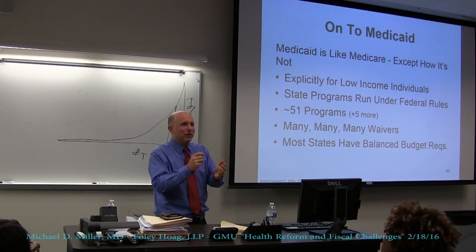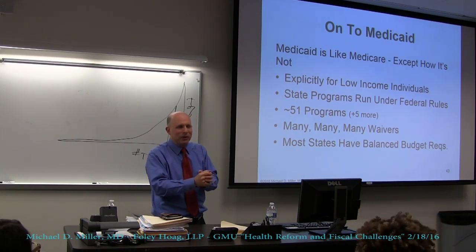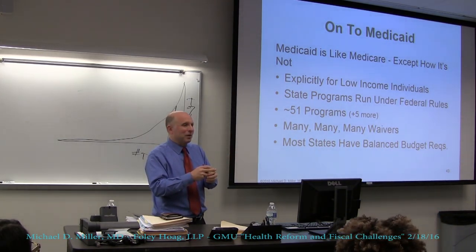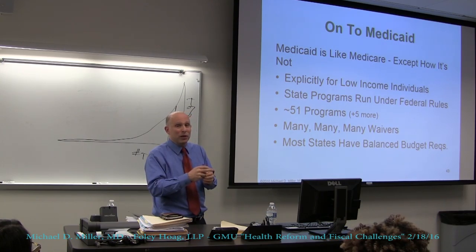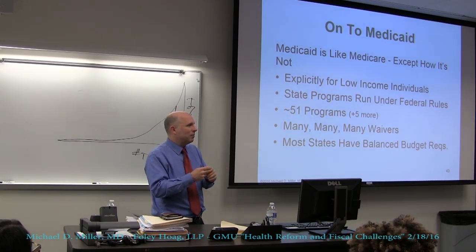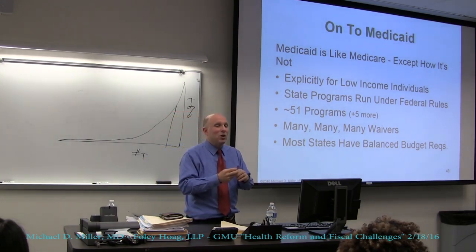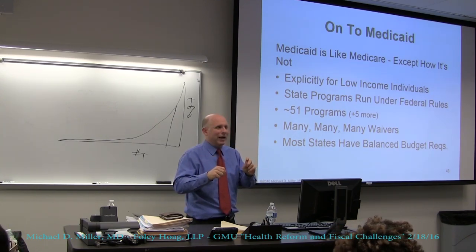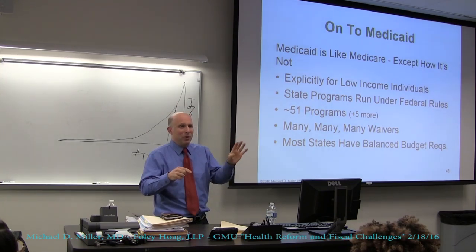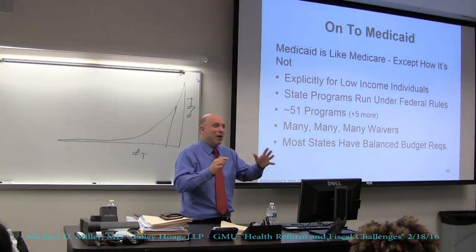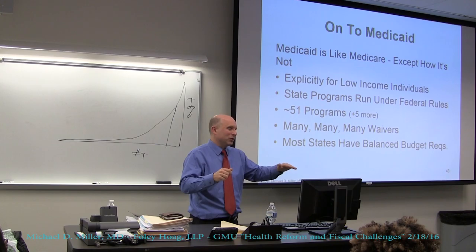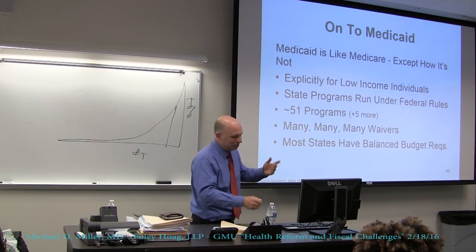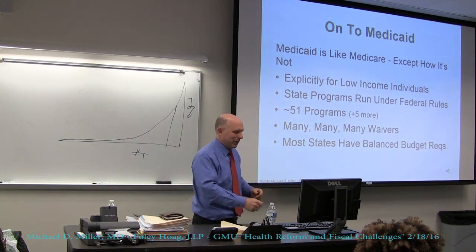Extraordinary flexibility had to be exercised to get RomneyCare done — the Massachusetts program was done as a waiver, because Romney and Kennedy both wanted it. They massaged the numbers. Romney actually ended up spending more in the early years than even projected, because the number of people getting low-income subsidies was a lot higher than had been scored in the waiver. Everybody kind of knew the number they were using for subsidies was too low, but everybody agreed that was the number they were going to use.